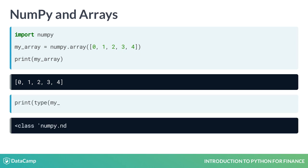You can use the type function, as you did in the previous chapters, to check the type of my_array, which is a numpy.ndarray.